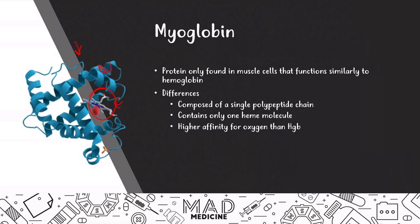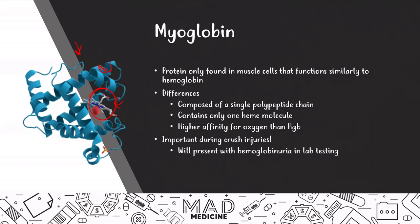When does myoglobin become important? It becomes important during crush injuries. When muscle cells are broken, myoglobin is released into the bloodstream and will present as hemoglobinuria in lab testing — because we're not able to differentiate whether it's hemoglobin or myoglobin in those tests. It's actually a false positive for hemoglobinuria. This can also happen to people who work out very hard and then the next day see red in their urine — it's not blood, it's myoglobin being released from muscle cells.